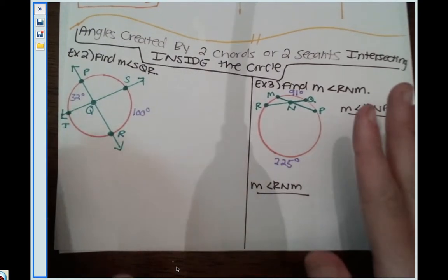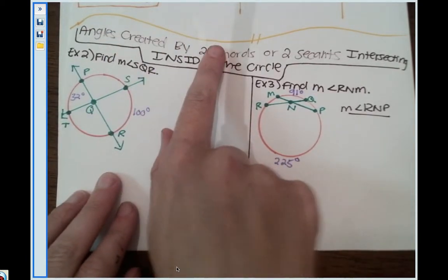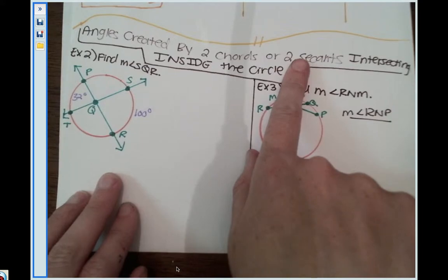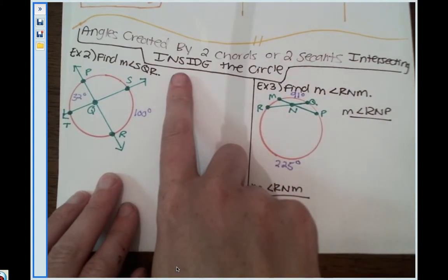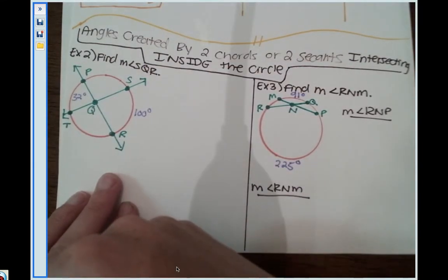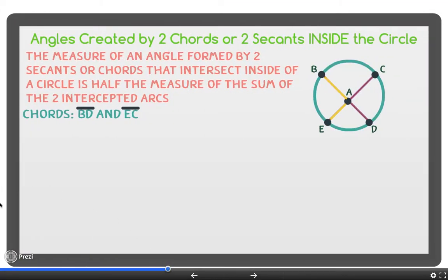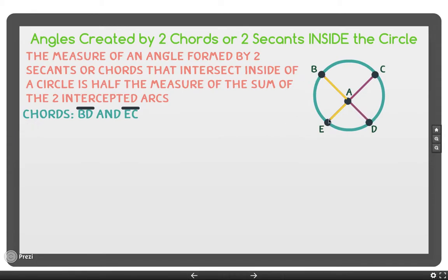We're moving on to new types of angles created by two chords or two secants intersecting inside the circle. We need to refer back to that property we learned about on the prezi. The measure of an angle created by two chords or two secants inside the circle has a relationship between the intercepted arcs created by the two segments or lines.